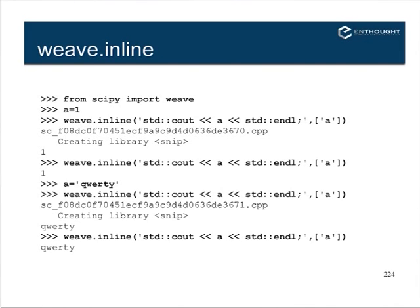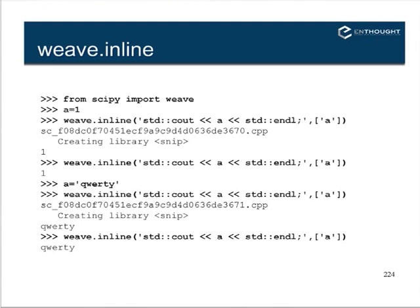This example won't work quite right from IPython because IPython does something with standard out — it's not the standard output that C uses when it writes out. The example sets a variable A equal to one, then calls weave.inline writing A to standard out followed by a newline character. This is basically a printf or print statement for C++. We tell it that variable A needs to cross from Python into C. Under the covers, it takes that line, puts it in boilerplate C++ code that does the wrapping and unwrapping of A from a Python integer into a C integer, calls the function, and prints out one. It's done everything for you in the background.